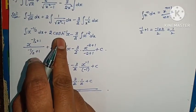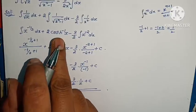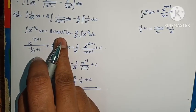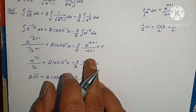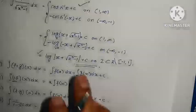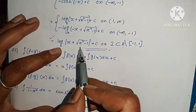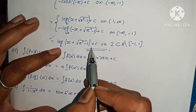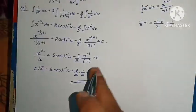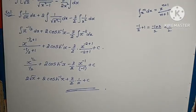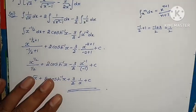For integral 1 by root(x squared minus 1) dx, the direct formula gives cosh inverse x plus c. Alternatively, you can write it as log mod of x plus root(x squared minus 1) plus c. Both are correct and will get full marks. So don't worry — whichever form matches your textbook answer, use that.